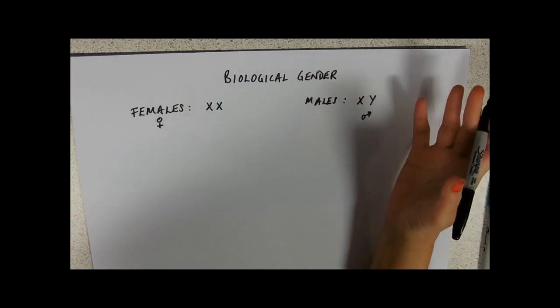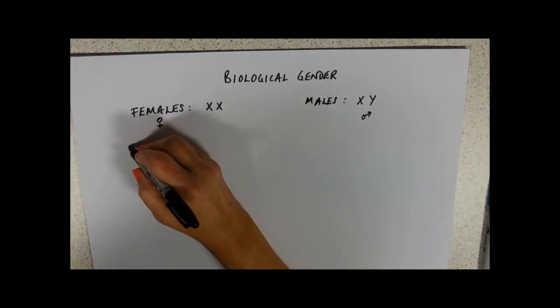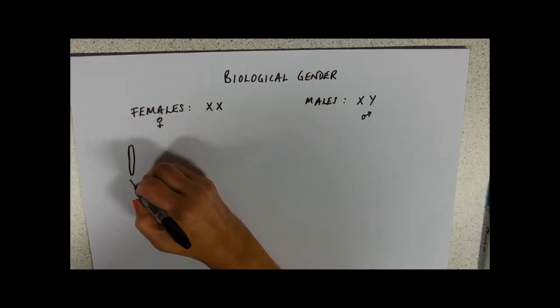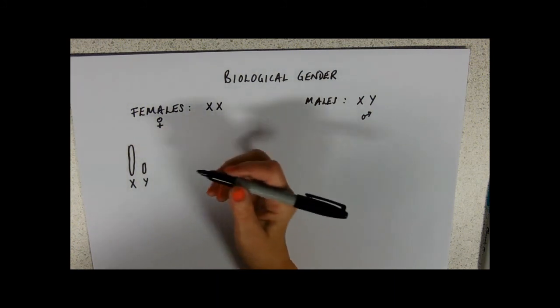Now the difference between an X and a Y chromosome is effectively in size. So if you go onto the internet and have a look at the sizes of these chromosomes what you'll see is an X chromosome is quite chunky and big and a Y chromosome is less so.